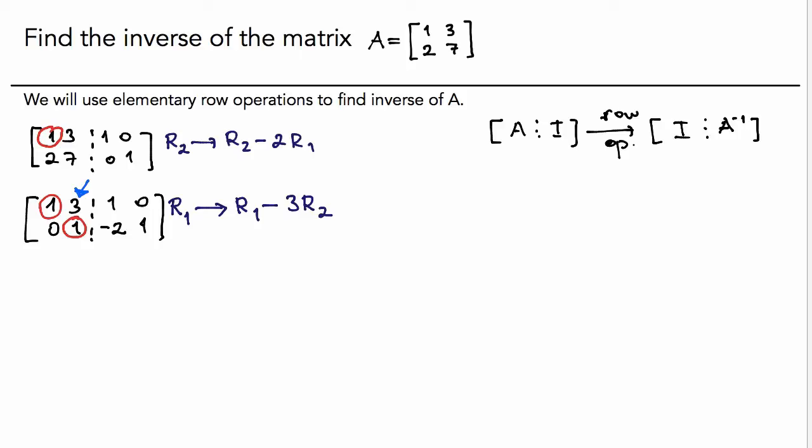In the next step, I applied: zero times three is zero. Subtract from one is the same thing. One times three is three. Three minus three is zero. Negative two times three is negative six. One minus negative six is going to be seven. And one times three is three. Zero minus three is negative three.